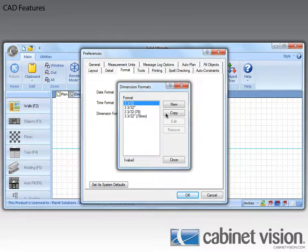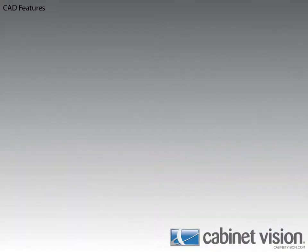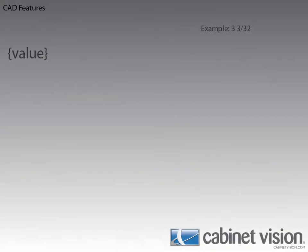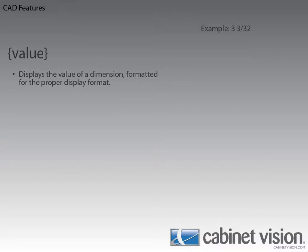Let's click on the new button to check out how to create our own format. I want to talk about the formatting variables that we can use. Each variable must be contained in curly brackets for Cabinet Vision to convert it to the proper number. Let's start off with the value variable. We're going to work on the assumption that Cabinet Vision is displaying dimensions using the Imperial system, with the example of 3 and 3/32nds of an inch. The value variable will display the value of a dimension formatted for the proper display format — for our example, that means 3 and 3/32nds.